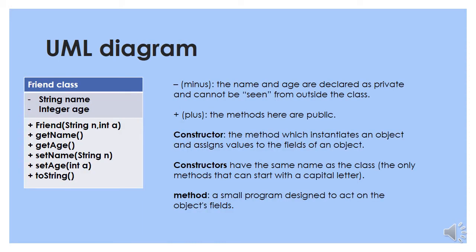A UML diagram is basically the picture on the left here. A minus means that the variables are private and they cannot be seen from outside the class. A plus means the methods are public in this UML. A constructor is the method which instantiates an object and assigns values to the fields of an object. Constructors always have the same name as the class, and they are the only methods that can start with a capital letter.